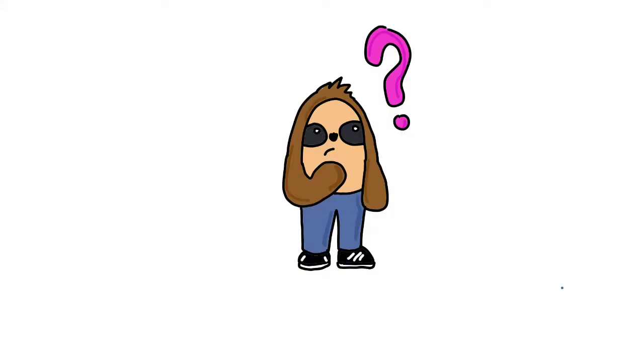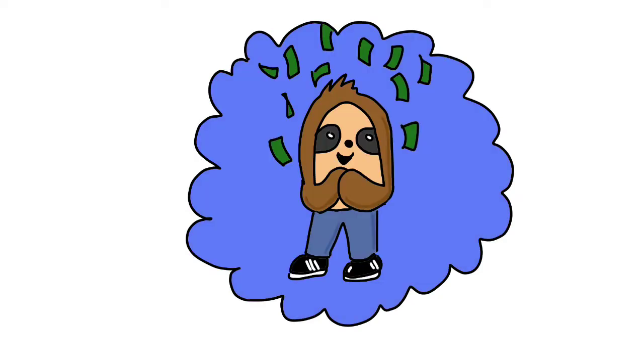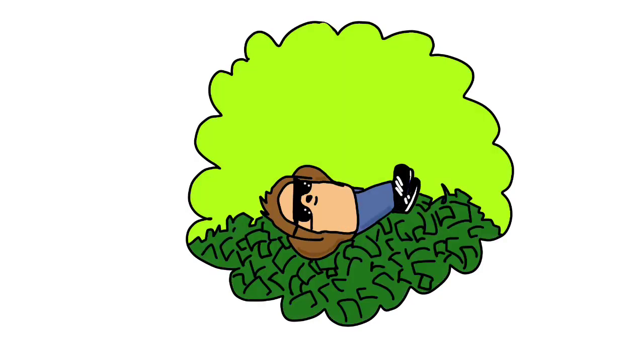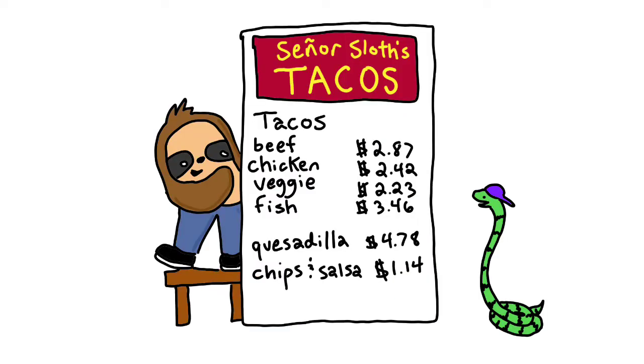Now I've got another illustrated math problem for you guys. Henry the Sloth is trying to think of ways to make some extra money. He's got an idea. A taco truck would help him make lots of extra money. Now to make all that extra money, he's going to have to do a lot of planning and work. Let's see what he came up with.